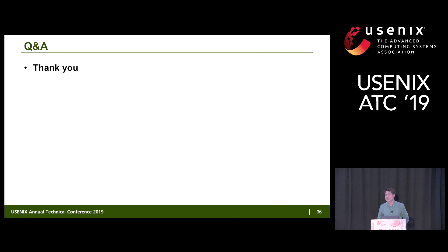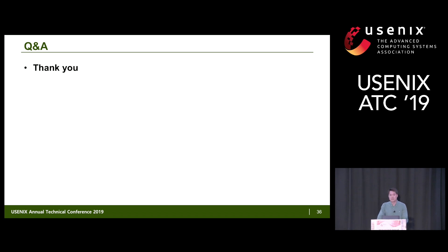Jason Hennessy from NetApp asked whether the speaker examined effects of the changes on latency variability — specifically 99th percentile latency and predictability, given the impressive average latency improvements shown. The speaker acknowledged this as a good question about tail latency, noting it was not the focus of the current work but would be a good direction for future work.